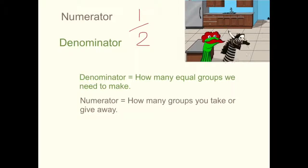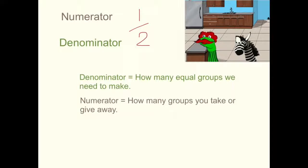Let's have a look at what makes up a fraction. Here we have a half. Now, if you remember, the top number is called the numerator and the bottom number is called the denominator. The denominator tells us how many equal groups we need to make. The numerator tells us how many groups you take or give away.